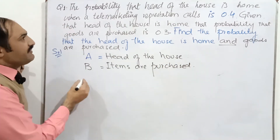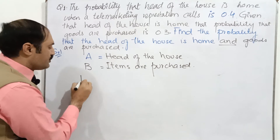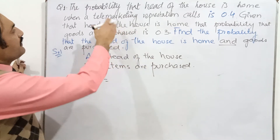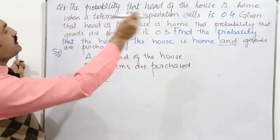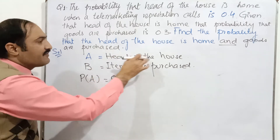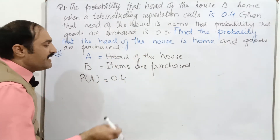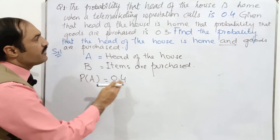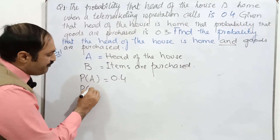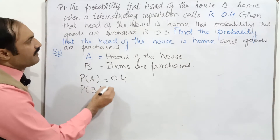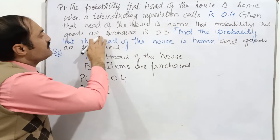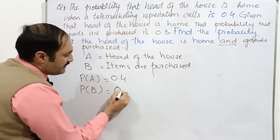So here we can say that the probability that the head of the house is home when a telemarketing representative calls is 0.4. And we can say that probability of B — goods are purchased — is 0.3.